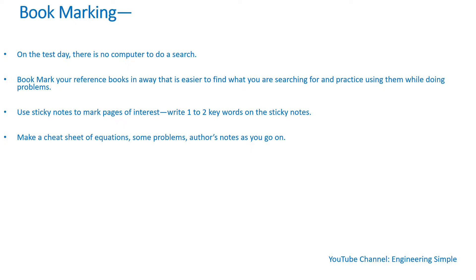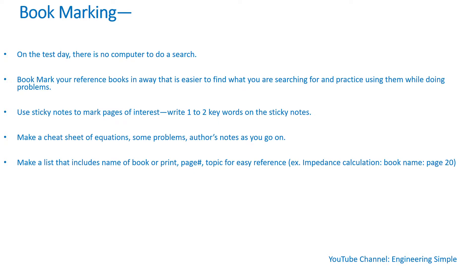Make a cheat sheet of equations and interesting problems you came across as you go. Also make a list that includes the name of the book — or if it's a PDF you printed, note the page number and topic. As you are reading, take note on a Word document or by hand so you can take that list to the PE test and reference things easily. For example, if a question is about impedance calculation, you can go to your list, find the book name and page number, and open it quickly.